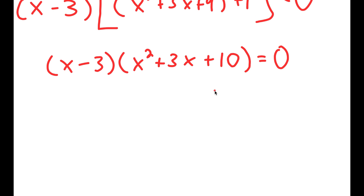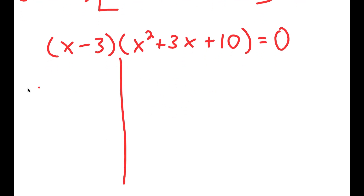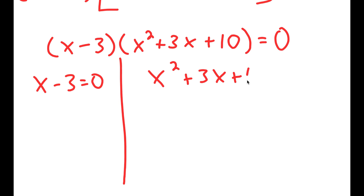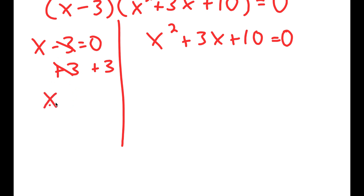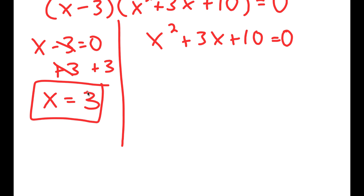Now I have two equations from this. I get x minus 3 is equal to 0, and x squared plus 3x plus 10 is equal to 0. For x minus 3 equals 0, this is fairly simple — all I have to do is add 3 on both sides. These two cancel out, and I get x is equal to 3. So this is one solution of x.